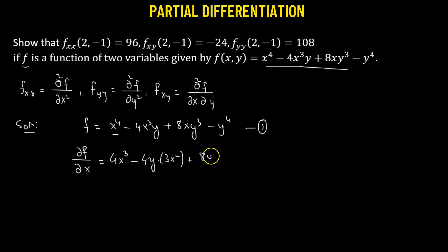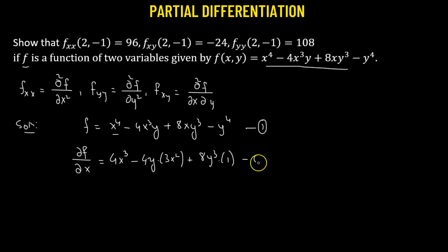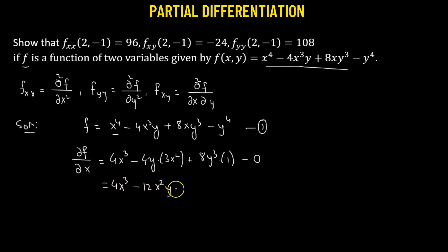Plus 8 times y cubed, which is a constant, multiplied by the partial derivative of x with respect to x, which is 1. The partial derivative of y to the power 4 is simply 0. This gives us 4x cubed minus 12x squared y plus 8y cubed, which is the partial of f with respect to x.